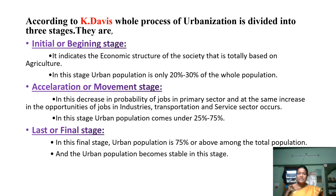In the acceleration or movement stage, there is a decrease in probability of jobs in the primary sector and at the same time an increase in population in jobs in industries, transportation, and service sectors. In this stage, urban population comes under 25% to 75%.